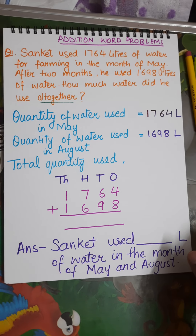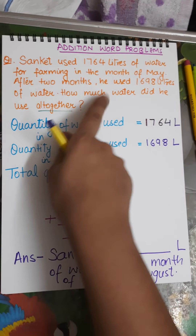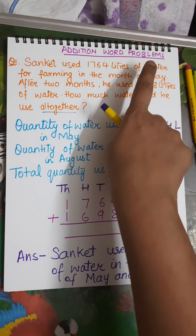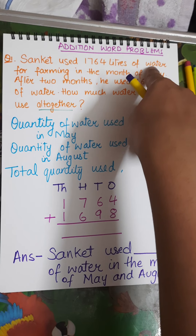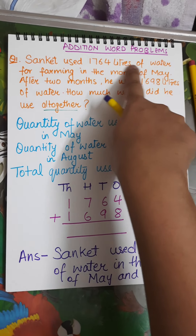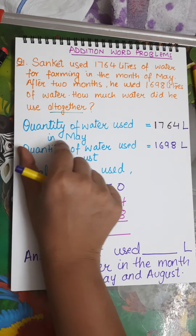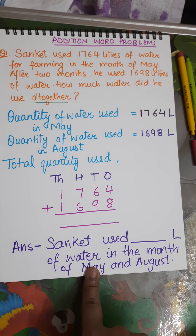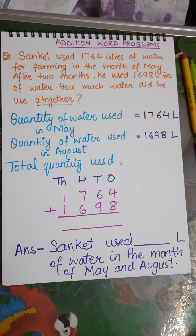There is one more video in which I am going to talk about another variety of word problem. Just remember: whenever the word problem involves something in liquid form — like water, milk, diesel, or petrol — measured in litres, we use 'quantity' rather than 'number.' Keep that in mind and solve accordingly. Bye!